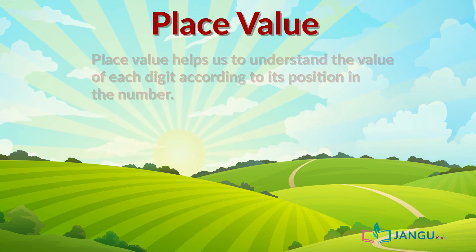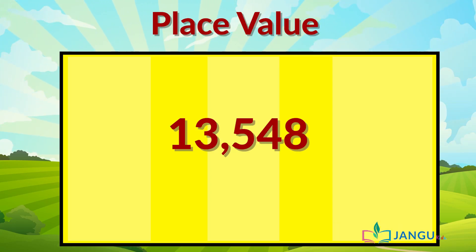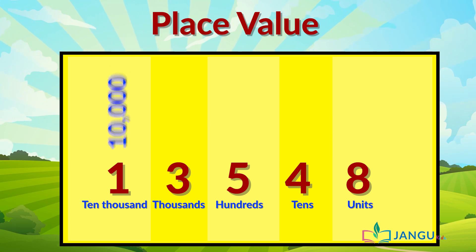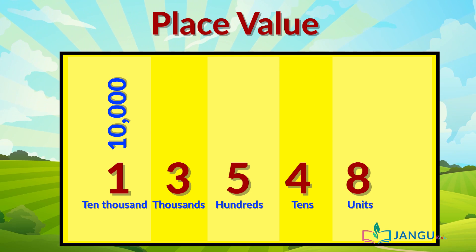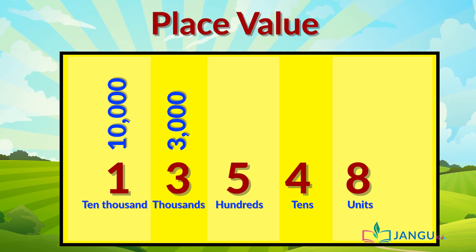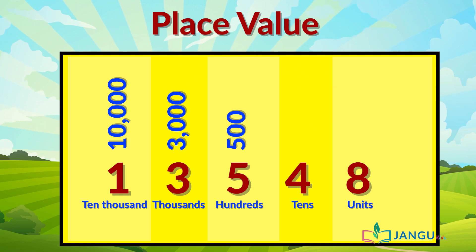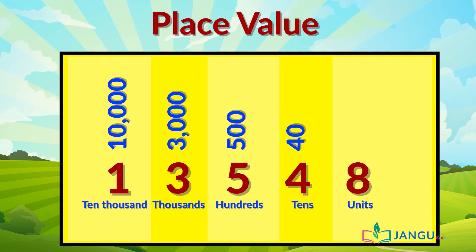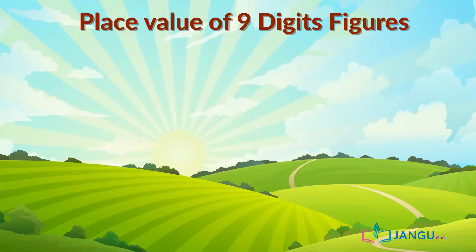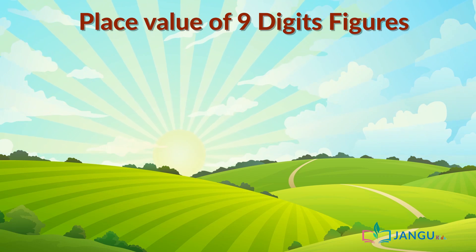Take a look at the example. In 13,548: 1 is in the ten-thousands place and its place value is 10,000; 3 is in the thousands place and its value is 3,000; 5 is in the hundreds place and its place value is 500; 4 is in the tens place and its place value is 40; 8 is in the units or ones place and its place value is 8. So how do you determine the place value of figures up to 9 digits?